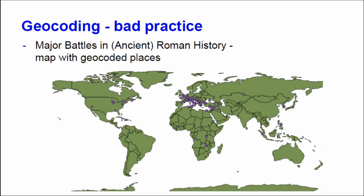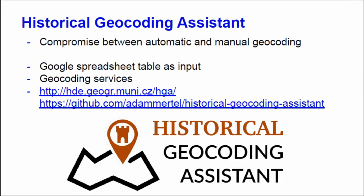I realized this is not a good solution, and I started thinking about something in the middle — something like an assistant geocoding that is still automatic but still possible to validate in the process. So we came up with a solution we called the Historical Geocoding Assistant. It's a web application we would like to share. It suggests geocoding ideas to you and you can use them.